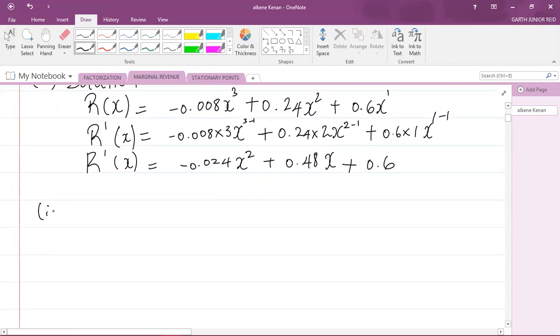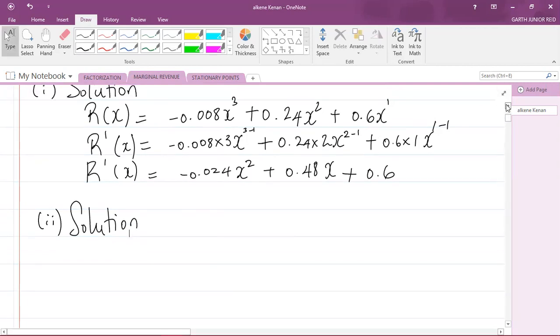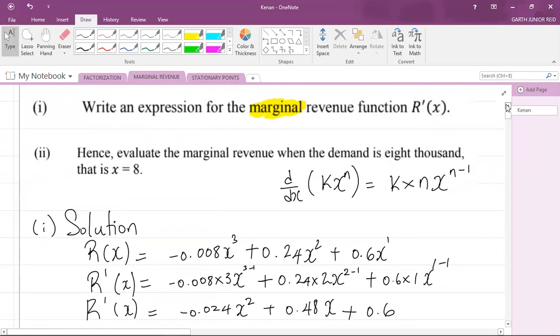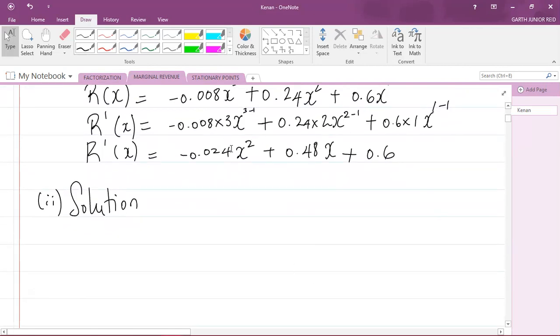Let us now do part two. Part two says hence, evaluate the marginal revenue when the demand is 8,000, that is when x equals 8. Now, whenever you see this word that says hence, it means that we have to use something from the previous question in order to answer this question. So it means that we're going to have to use the marginal revenue function that we have just calculated in the previous question to answer the question we're about to answer here.